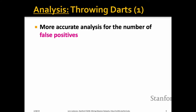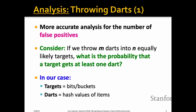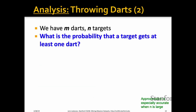In our case, targets are buckets in the bit array, and darts are the hash values of email addresses. We want to know how many buckets get at least one email address hashed to them. So we compute: what is the probability a given target gets at least one of M darts, where we have M darts and N targets?